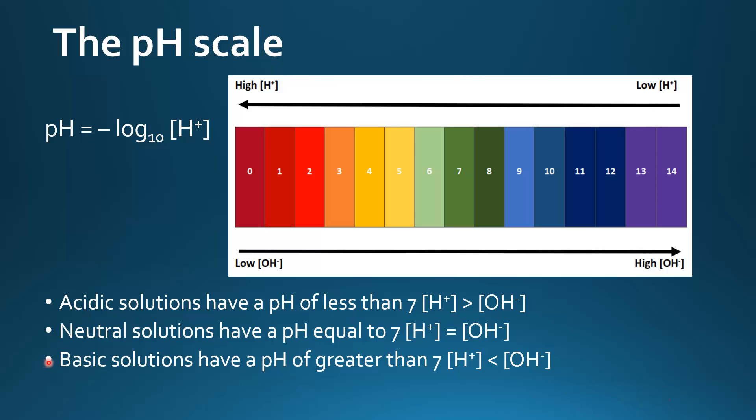Basic solutions have a pH of greater than 7. That's when the concentration of hydroxide ions is greater than the concentration of hydrogen ions.